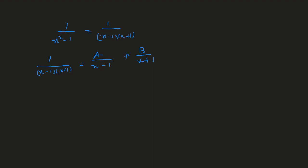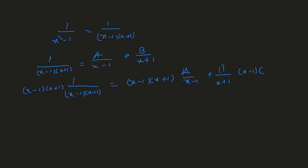The second step: multiply both sides of the equation by q(x), which is (x − 1)(x + 1). On the left-hand side, (x − 1)(x + 1) times 1 over (x − 1)(x + 1). On the right-hand side, multiply through and cancel: (x − 1) cancels with (x − 1) and (x + 1) cancels with (x + 1). After simplification, you get: 1 = A(x + 1) + B(x − 1).